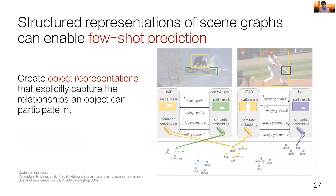Along the same vein, we can use relationships to develop compositional object representations. Just like Word2Vec builds word representations on which we can perform arithmetic operations, we develop object representations where you can perform operations defined by relationships. We show clusters of object representations depending on what relationships they can perform and which can be performed on them, and that this compositional embedding can enable few-shot learning of relationships and scene graphs.